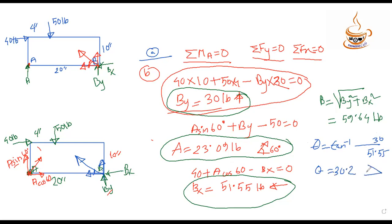That completes the solution for this problem. We have found the support reactions, the resultant force at the hinge, and the angle of the resultant. Hopefully this was clear — it's time to wrap up.